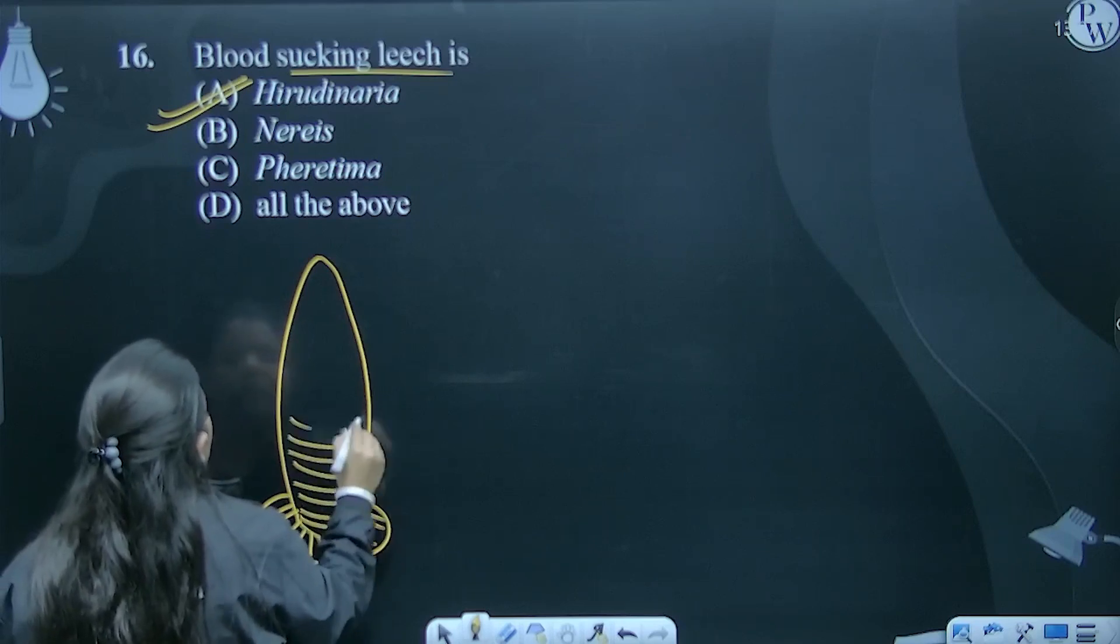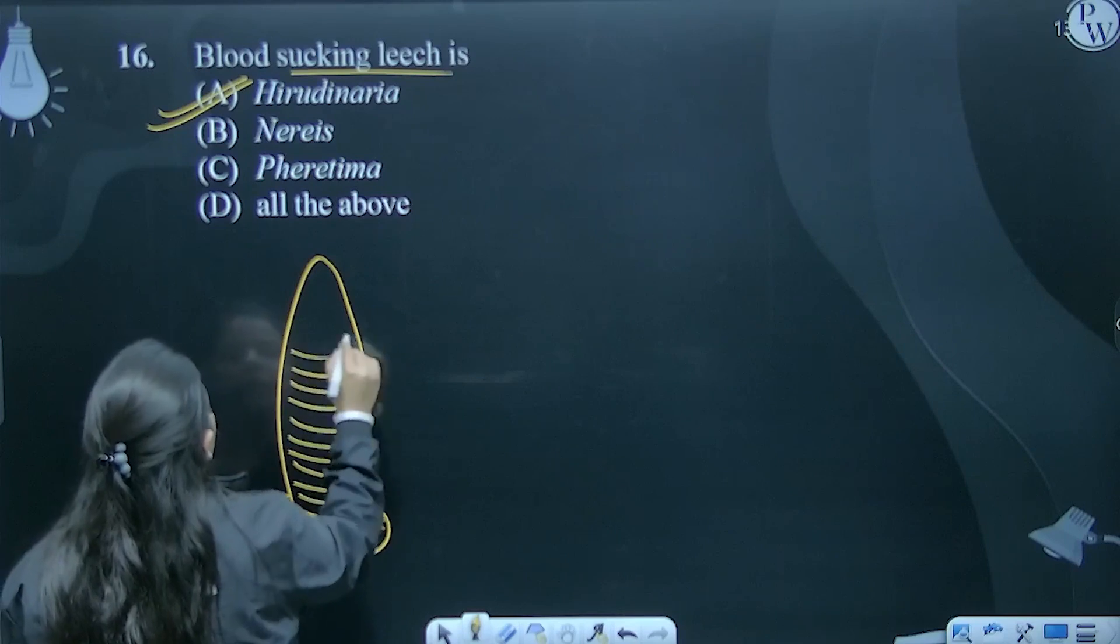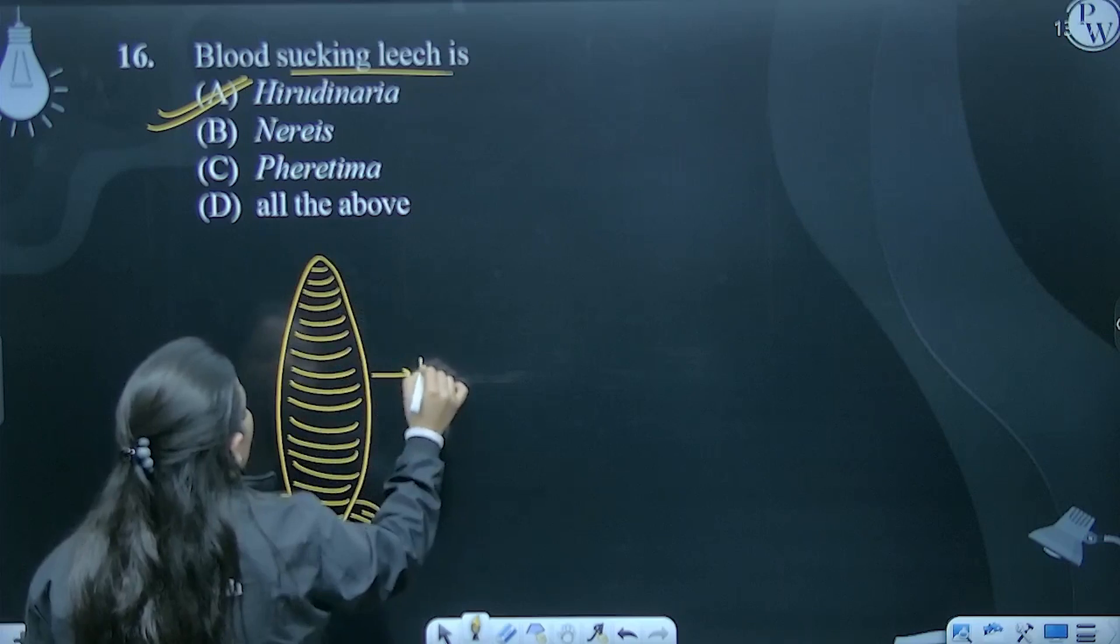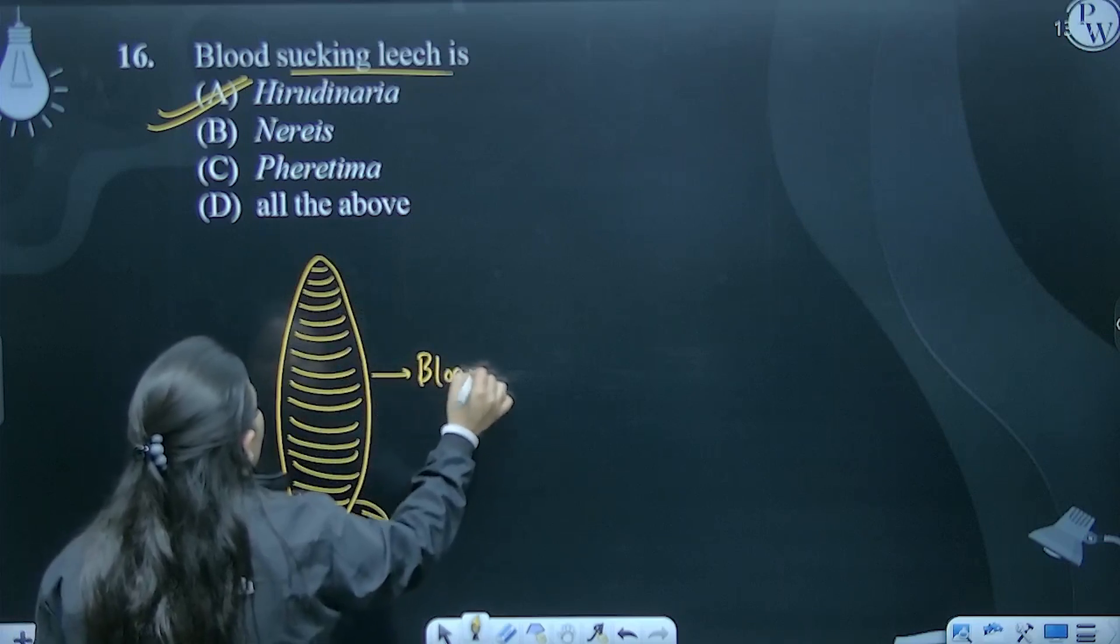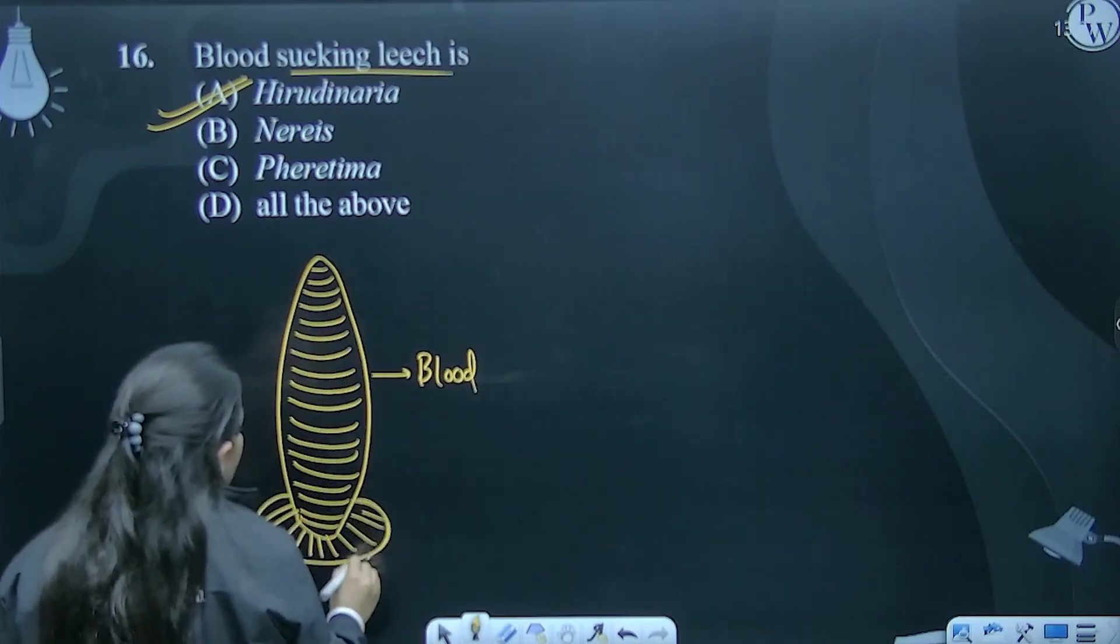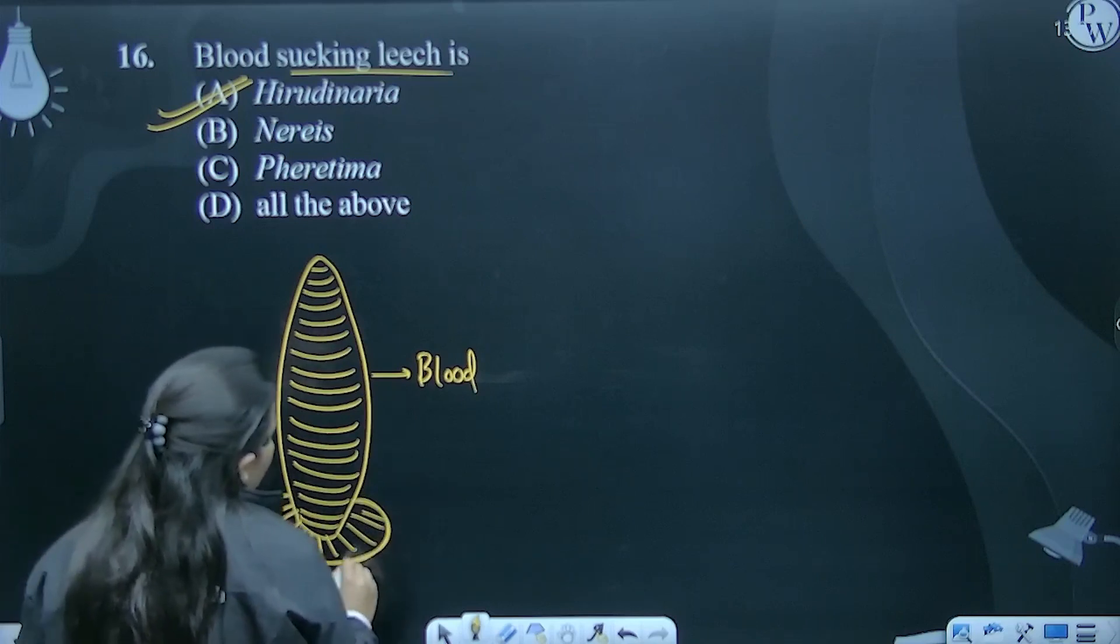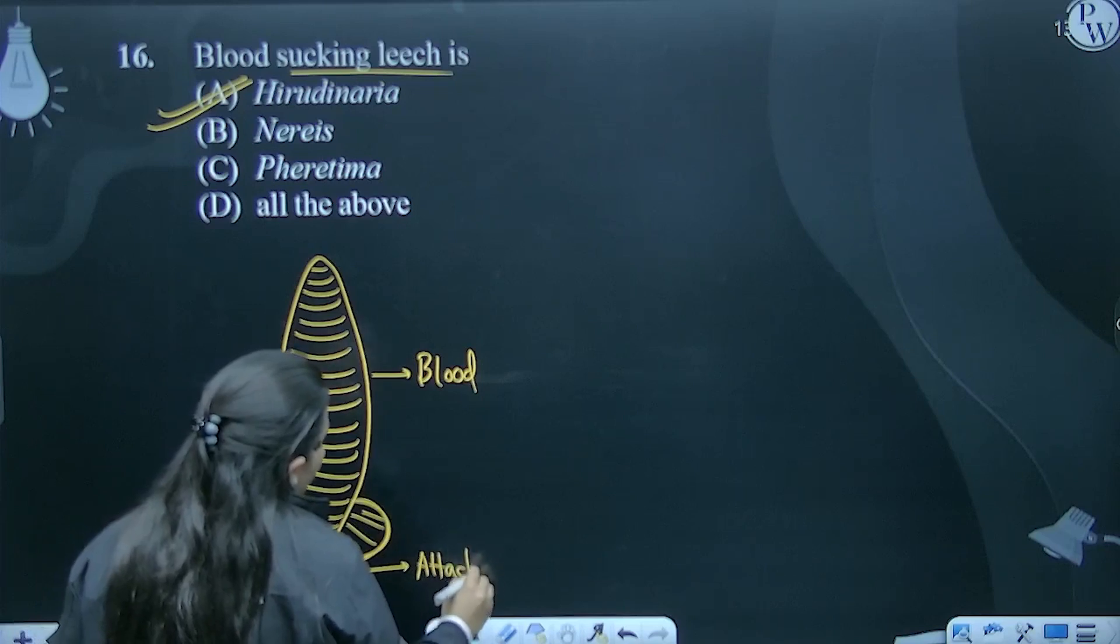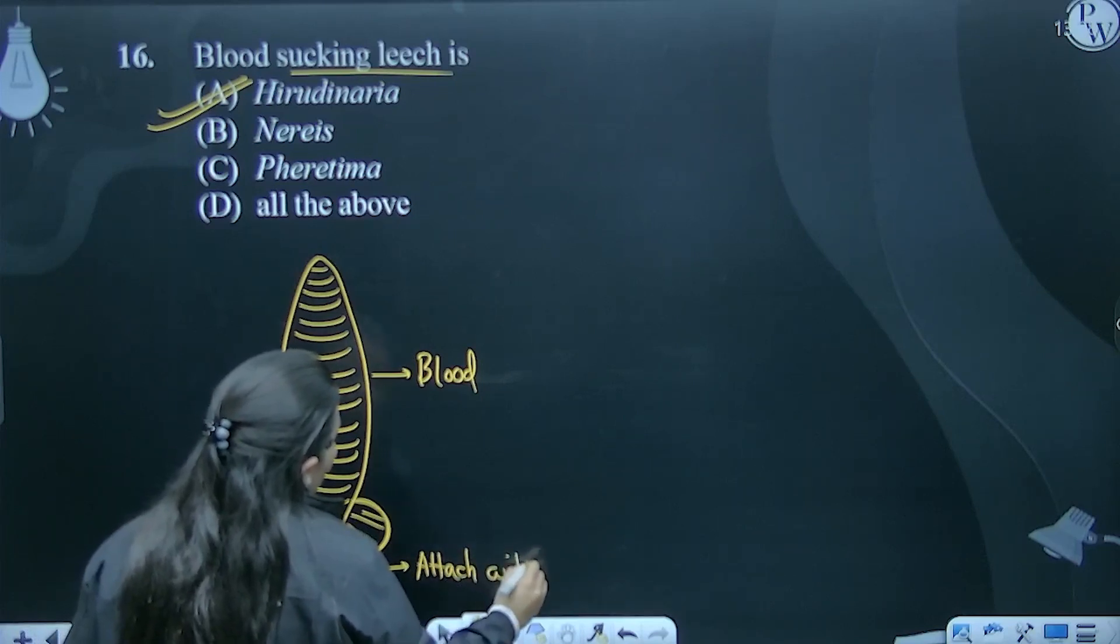These are segments present, like this. That's how it looks - blood sucking leech. It attaches from here to the host's body, attach with host body.